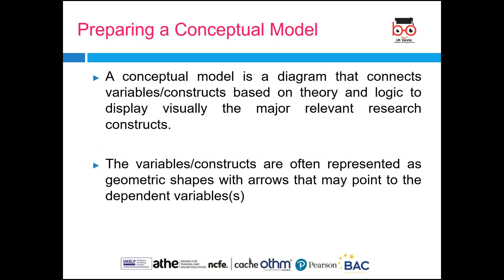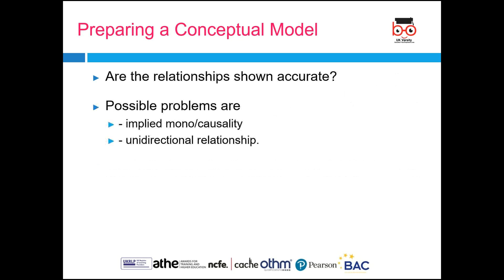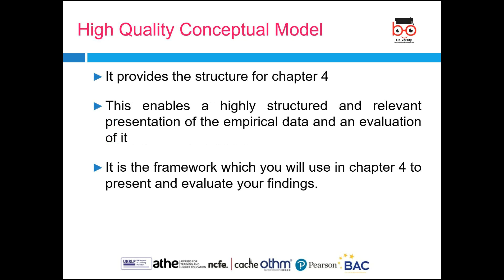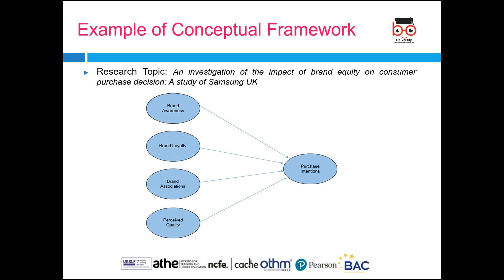How do you prepare a conceptual model? A conceptual model represents the connection of different variables based on theory and logic to display the major relevant research constructs, showing the link between independent and dependent variables, how you are going to conduct the study, and how you are going to collect data. The variable constructs are often represented as geometric shapes with arrows. You need to show the relationship between what you have reviewed from your literature. Possible problems include whether there is implied causality or a unidirectional relationship.